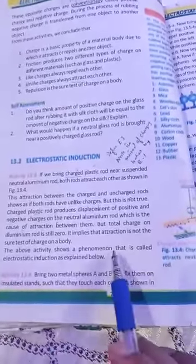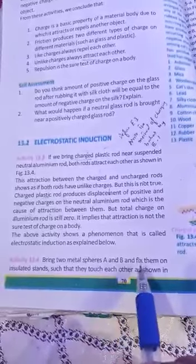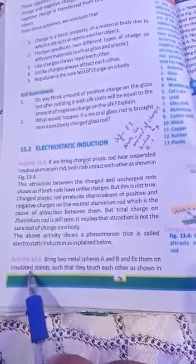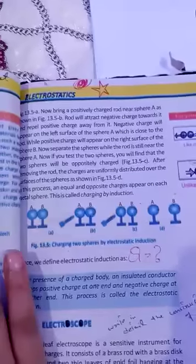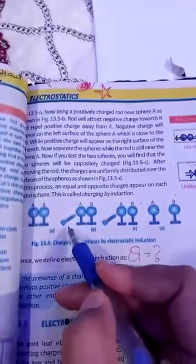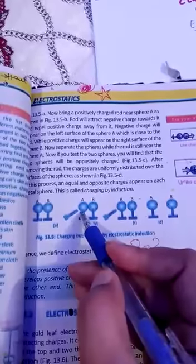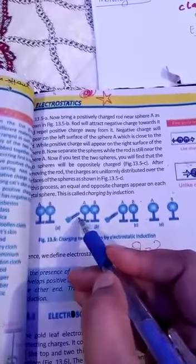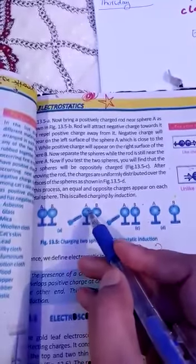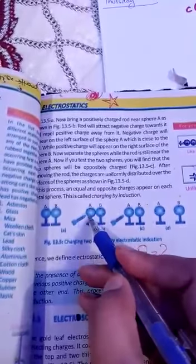دو metal spheres A اور B لیں اور انہیں insulated stand پر fix کریں — جس میں سے electricity pass نہیں ہوتی — تاکہ وہ ایک دوسرے کو touch کریں۔ اب ایک positive charge rod کو sphere A کے پاس لے جائیں۔ Rod، sphere کے اوپر جتنے بھی negative charges ہیں انہیں اپنی طرف attract کر لے گا اور positive charges کو دور کر دے گا — positive charges دوسرے سرے پر آ جائیں گے۔